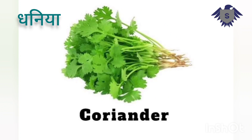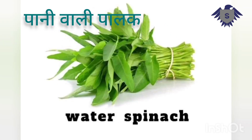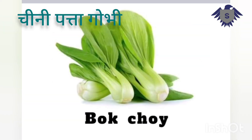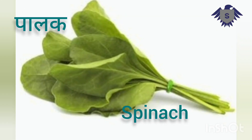Coriander — Dhaniya. Water Spinach — Pani Wali Palak. Broccoli — Hari Phool Gobhi. Bok Choy — Chini Patta Gobhi. Spinach — Palak.